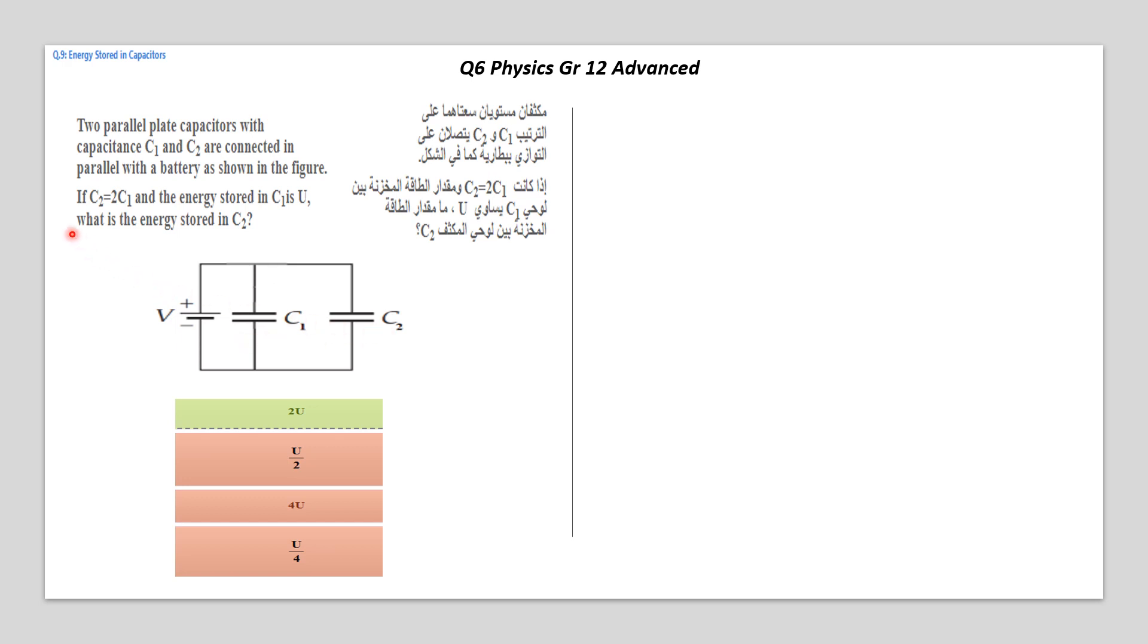C1 and C2. They ask if C2 is equal double C1. And the energy stored in C1 is U. What is the energy stored in C2? So the capacitance in C2 is double the capacitance in C1. So how will this affect the energy stored in C2?